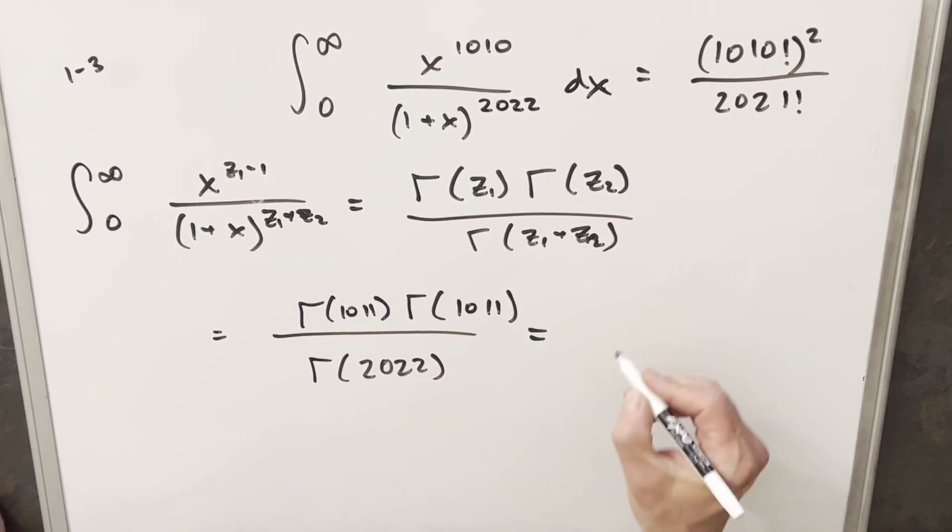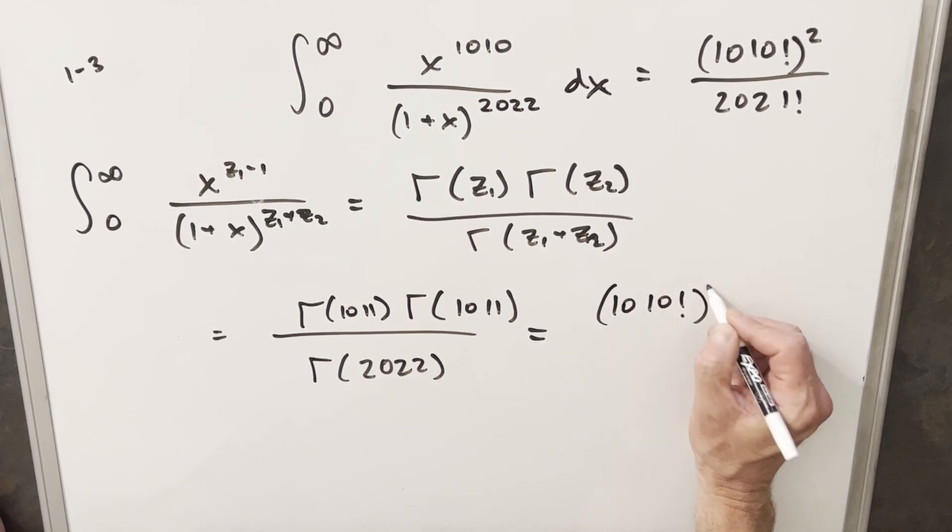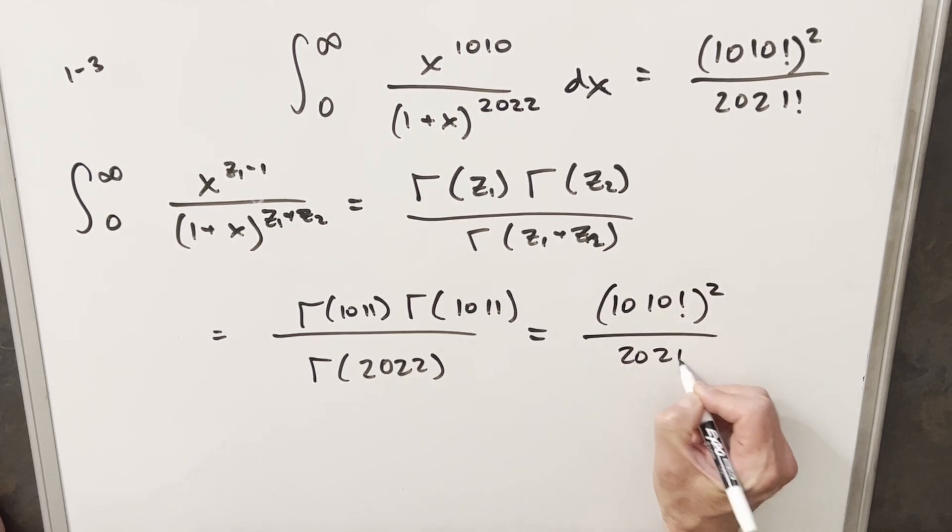And this would come out the same as our solution that we found previously, 1010 factorial squared over 2021 factorial. And of course, this way is probably quicker. But also, I don't know about you, but I have a hard time remembering this formula. So it's kind of nice to work back to a more familiar form of the beta function.